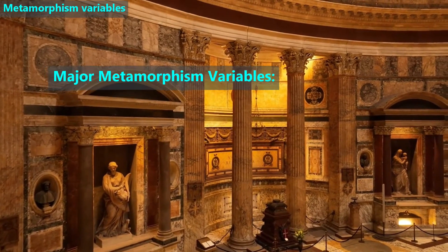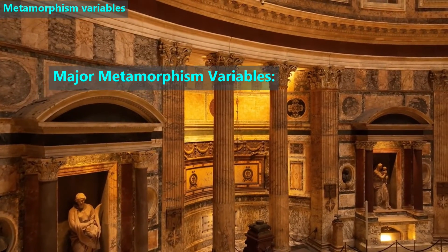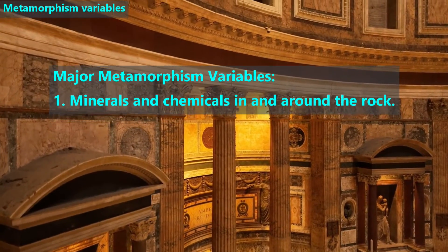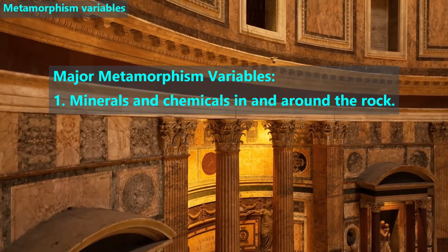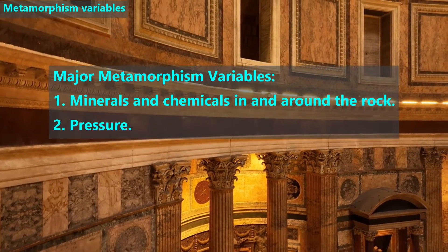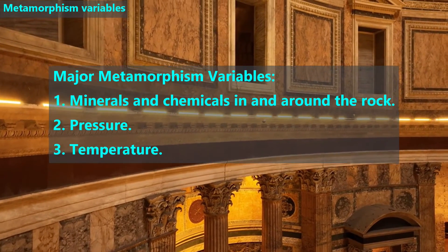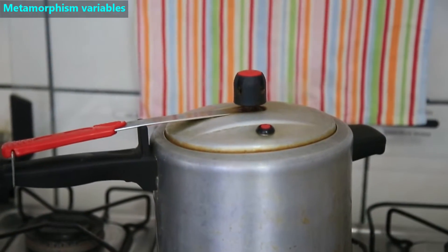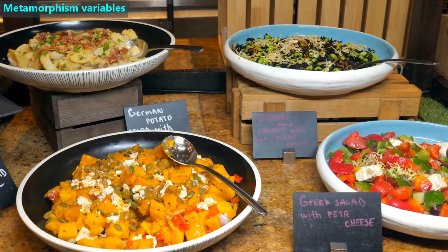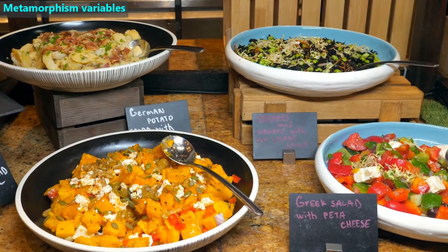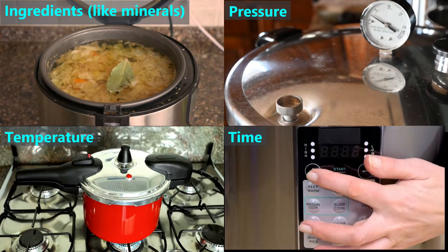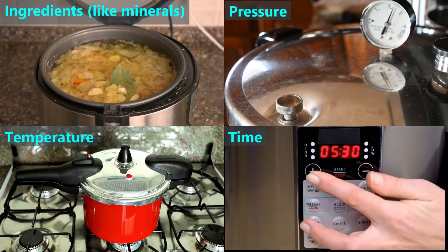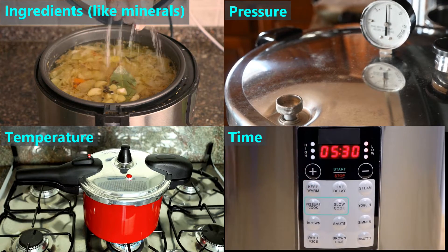To summarize, the major metamorphism variables to change one rock into another are: 1. The minerals and chemicals in and around the rock; 2. Pressure; 3. Temperature; and 4. Time. One way to remember these variables is to think of cooking with a pressure cooker. The metamorphic rock is like the final food that comes out of a pressure cooker. The major variables in cooking and metamorphism are the same, except in geology we use the words minerals or chemicals instead of ingredients.